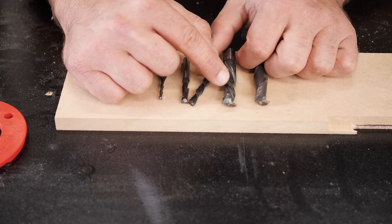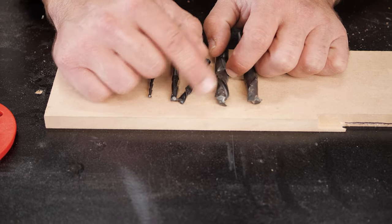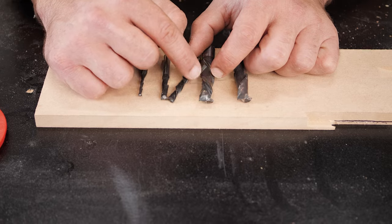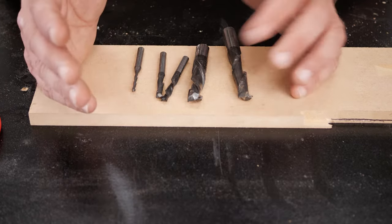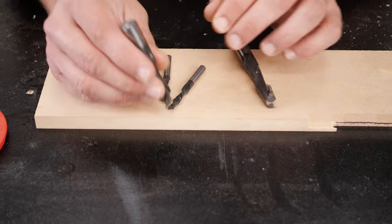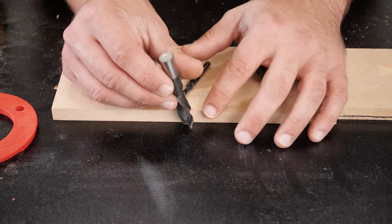This is a compression bit. A compression bit has an up cutter and a down cutter. You can see this is a down cut and this is an up cut. And what that's going to do, besides clearing chips...